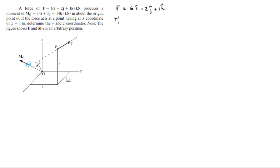We're given the moment that F creates about O which is 4 in the i plus 5 in the j minus 14 in the k, and we are trying to find P.